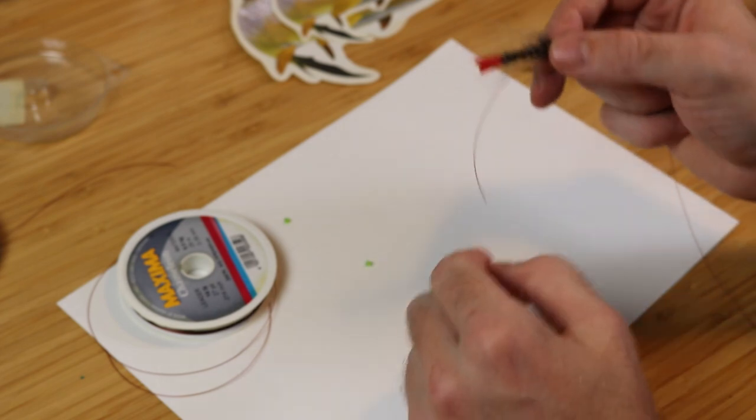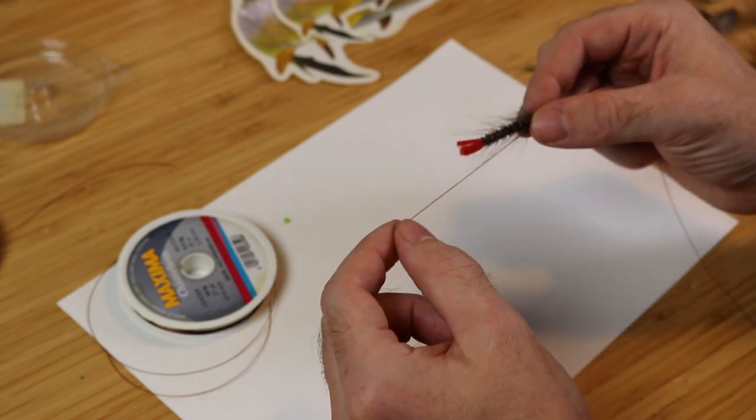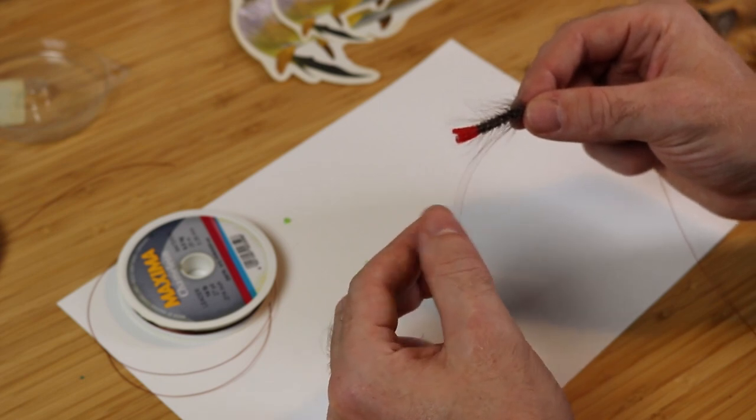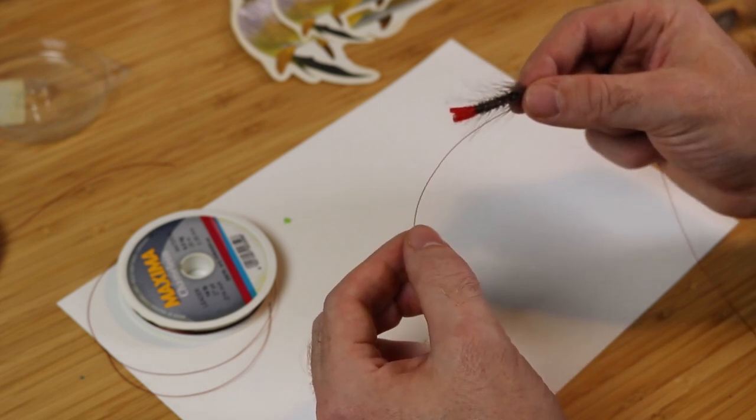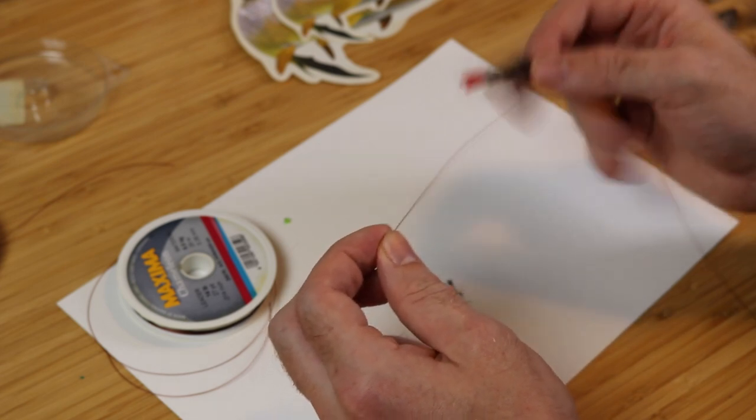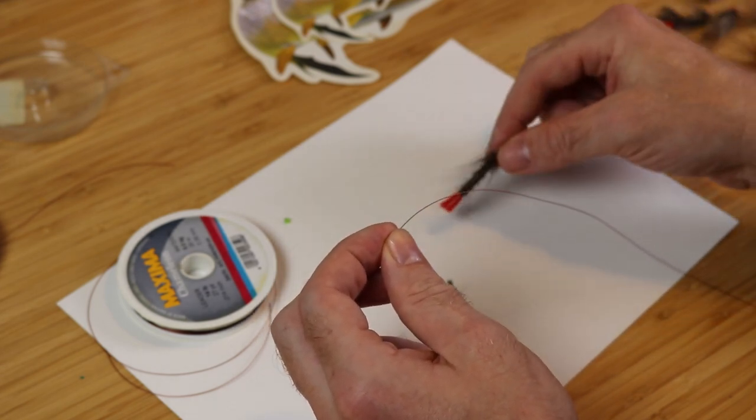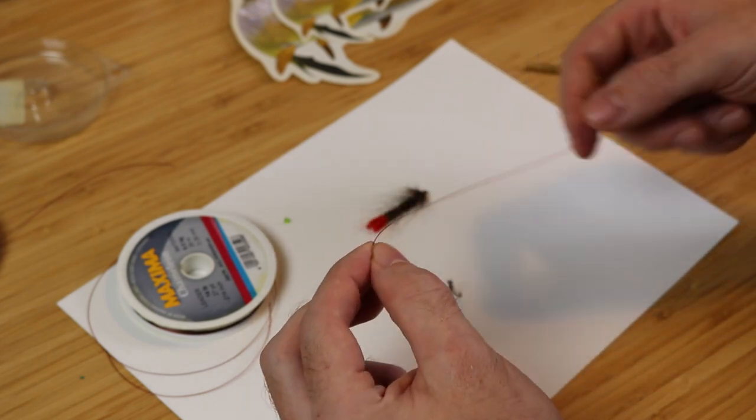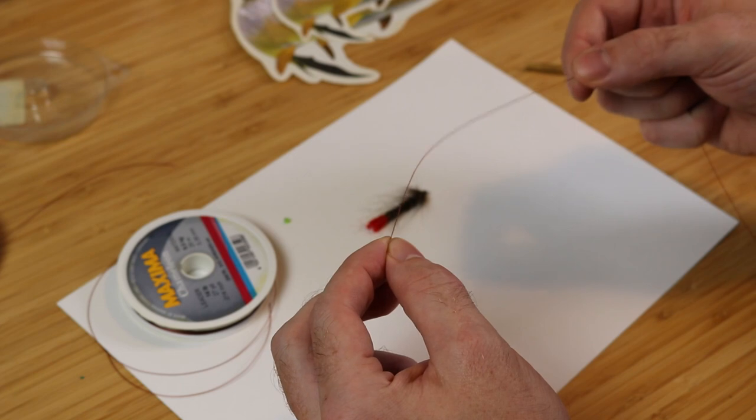You can use these small diameter beads like I have here, you can also use these plastic float stops that specimen fishermen use, those are also good to pop on here to prevent the knot from going through the tube fly.